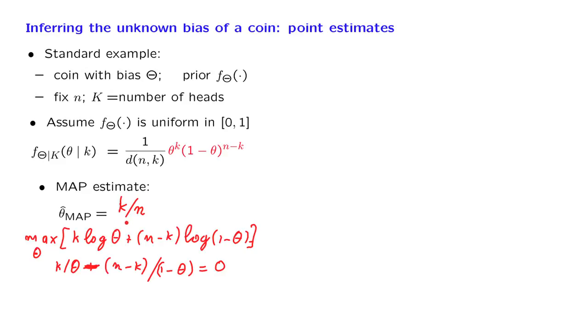This answer makes perfect sense. A very reasonable way of estimating the probability of heads of a certain coin is to look at the number of heads obtained and divide by the total number of trials. So we see that the MAP estimate turns out to be a quite natural one.